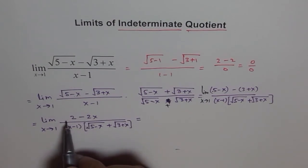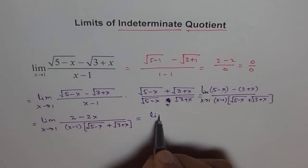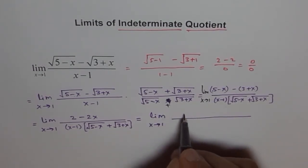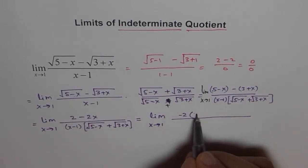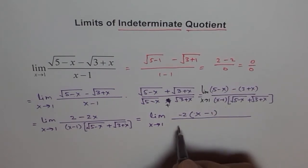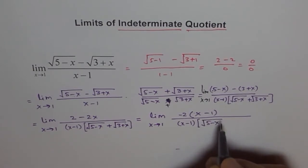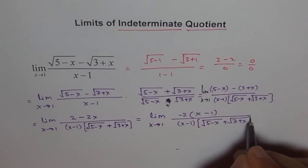So here we can factor out 2 and you are left with x minus 1. I will do that, limit x approaches 1 and in the numerator I have 2 times. Since in the denominator we have x minus 1, let me factor out minus 2. Then I get x minus 1 here, x minus 1 and we have x minus 1 in the numerator times square root of 5 minus x plus square root of 3 plus x.